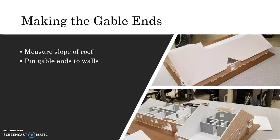To make the gable ends, I first had to measure the slope of the roof by the slope that was given in the kit. I then measured the length of the sides I had to attach a gable end to and cut out the foam board accordingly. After painting and etching it with the same brick pattern, I pinned it up onto the ends of the house, then measured the top two parts of the roof, cut them out on foam board, and made sure to incorporate the section that overlooks the back door.